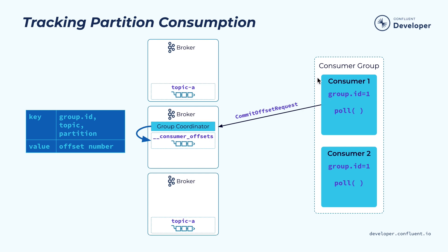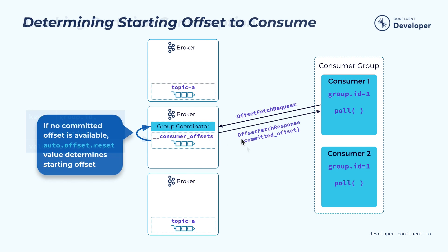In order to keep track of the position, the consumer can issue a commit offset request to the group coordinator. The coordinator will then persist that information in the underlying internal topic. If the consumer group instance is restarted, the first thing it can do is make a request to the coordinator to retrieve its last committed offset. Once it has the offset, it can resume consumption from that particular offset.